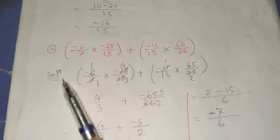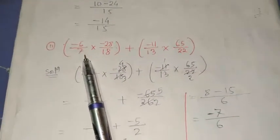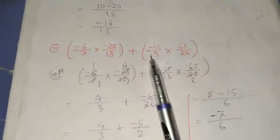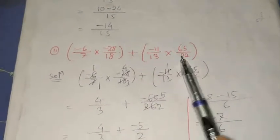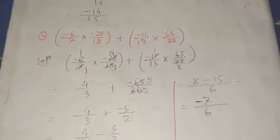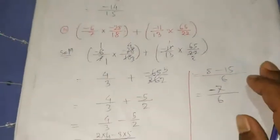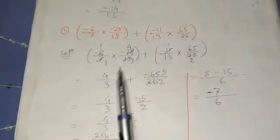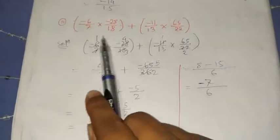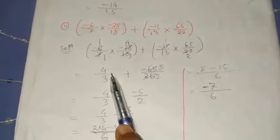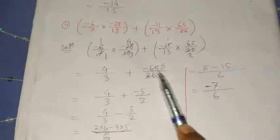Next, come to the second question. The second question is: minus 6 by 7 multiplied by minus 28 by 18, plus minus 11 by 13 multiplied by 65 by 22. First write the equation. We need to divide the numerator and the denominator by their common factor. If we divide, we get 4 by 3, plus 65 by 26.